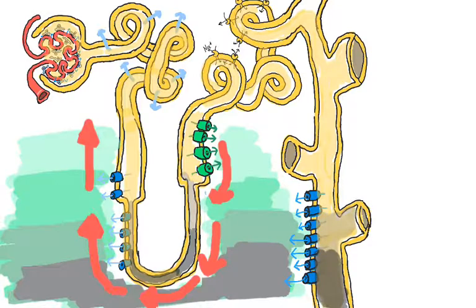If ADH is absent, dilute urine will be produced, because the water is not reabsorbed and stays in the filtrate to become urine. We make the distinction between filtrate and urine because once the fluid leaves the collecting duct and enters a minor calyx, that fluid will not change until it is excreted from the body.